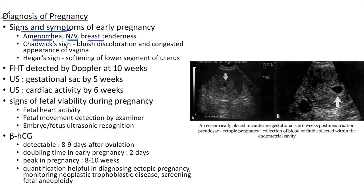Now let us see about signs of pregnancy. There are two named signs: Chadwick sign and Hegar sign. Chadwick sign is bluish discoloration and congested appearance of the vagina. Hegar sign is softening of the lower segment of the uterus. Fetal heart tone can be detected by Doppler at around 10 weeks.